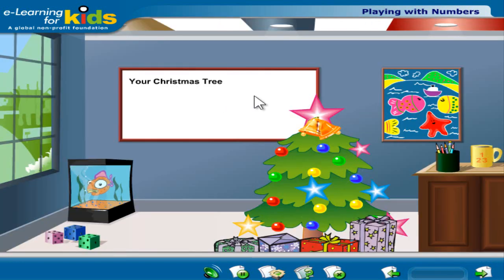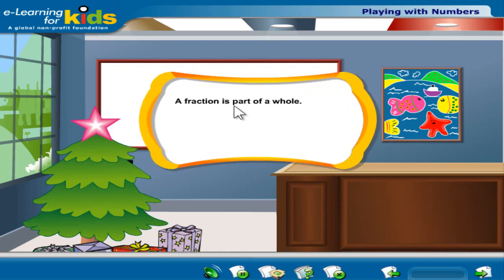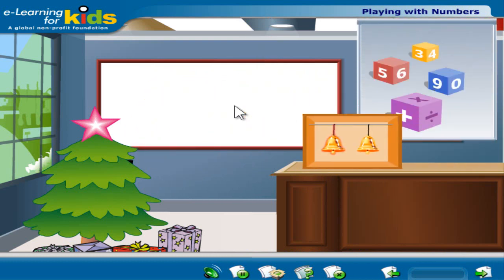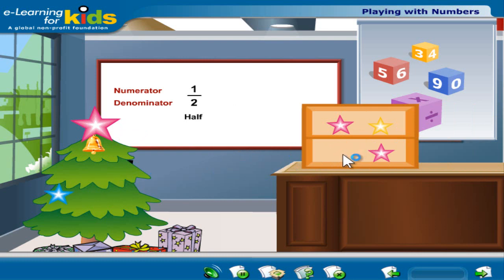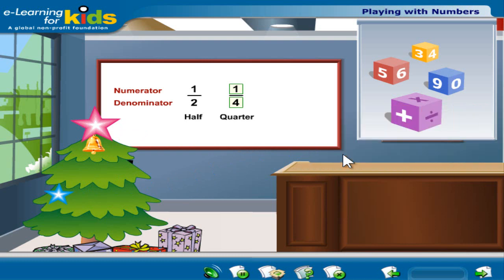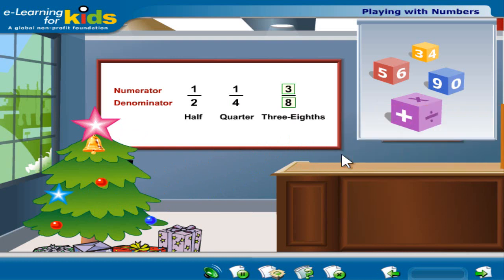Let's learn about fractions so that we can decorate our Christmas tree this season. Take a look at the fractions above. The number on top is the numerator and the one below is the denominator. These fractions tell us that we have 1 part out of 2, 1 out of 4, and 3 out of 8.